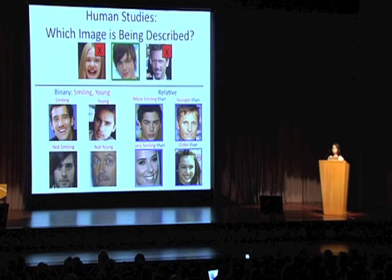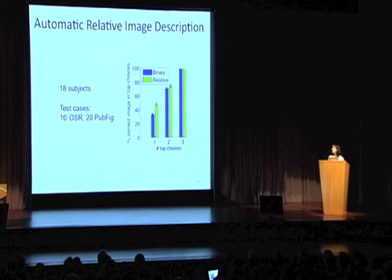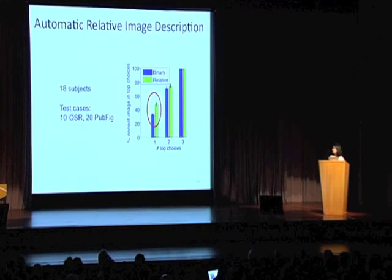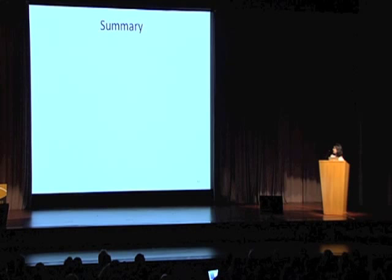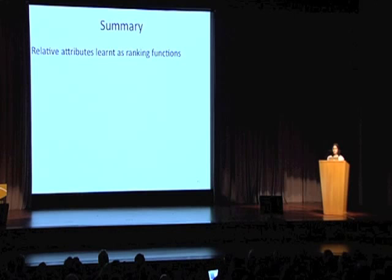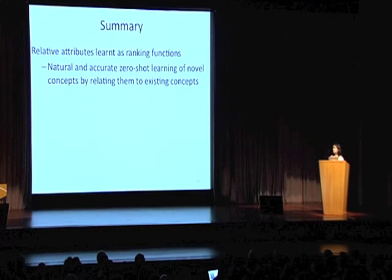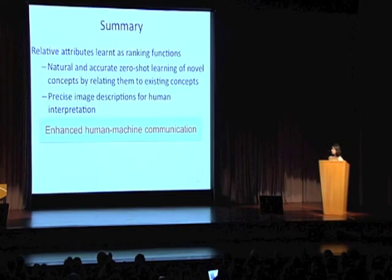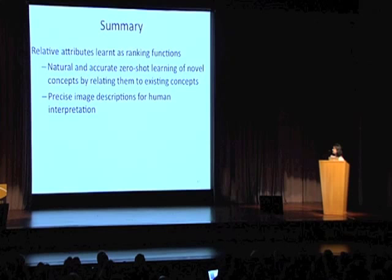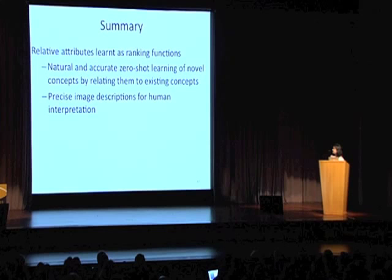In summary, we proposed the notion of relative attributes, which we learn as ranking functions. They allow for natural and accurate zero-shot learning, teaching the machine novel concepts simply by relating them to concepts it already understands. They also allow for precise image description that humans can interpret well. Most importantly, they enhance human-machine communication, with applications in image search, providing feedback, and more. The data from our paper is available online.